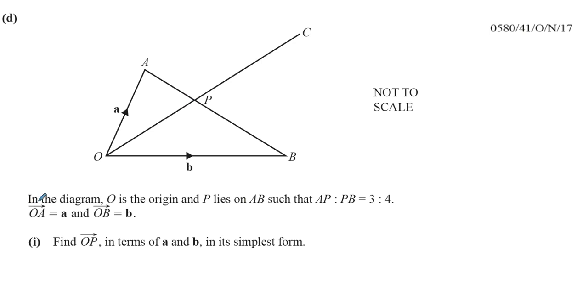They've told us in this diagram, O is the origin, and P lies on the line AB, such that the ratio AP : PB is 3 : 4.